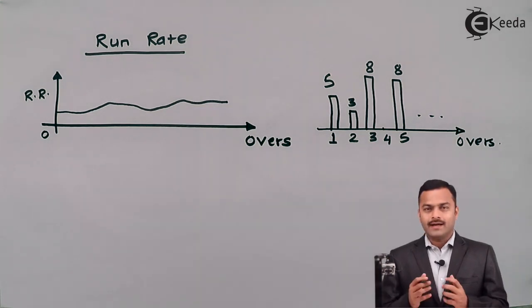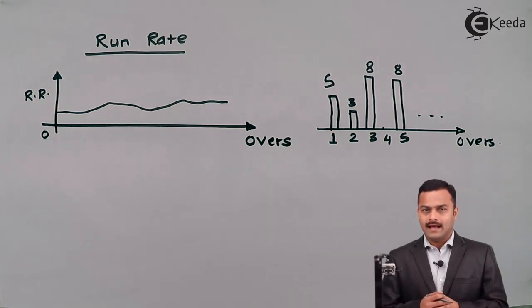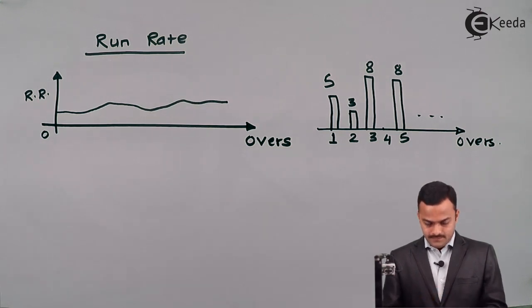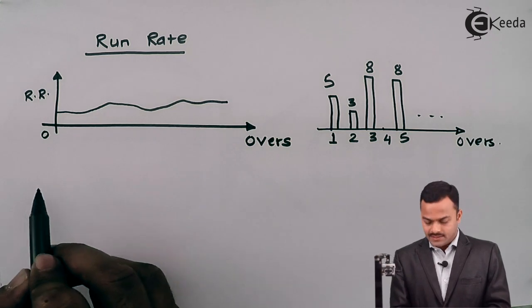So there are various types of signals we can see not only in one particular domain, but each and every domain. For example, we can have a graph of temperature against days. So that can also be considered as signal. But for our analysis, we normally consider the signals which are generated from the electrical system. Another definition I can give for the signal